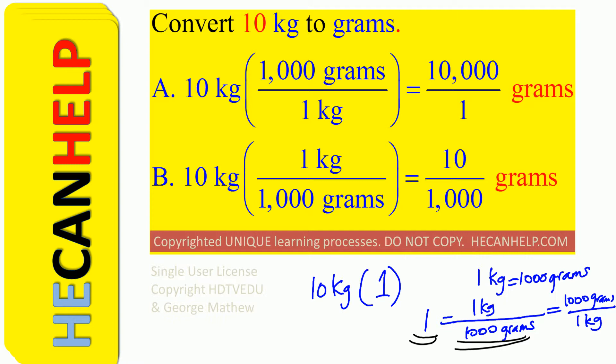What is equal to 1 kg? 1,000 grams. So 1 kg divided by 1,000 grams is 1. 1,000 grams divided by 1 kg is equal to 1. If that is the case, how do we replace this 1? Well, we replace it in such a way that the kilograms and the kilograms cancel.